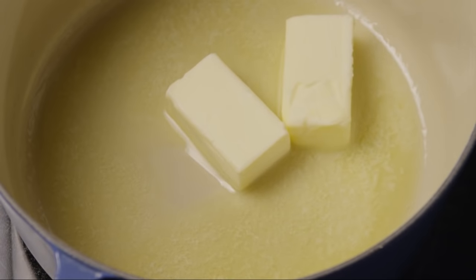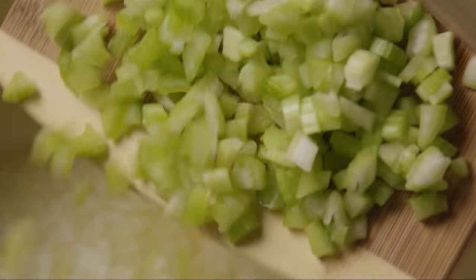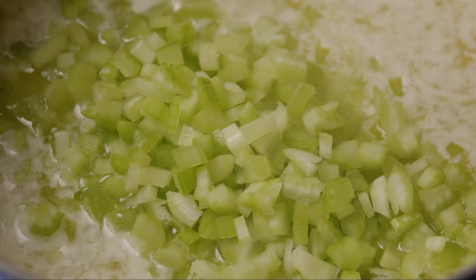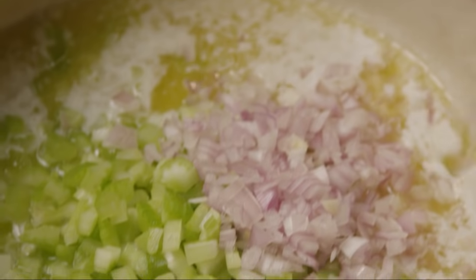Melt half a cup of butter in a medium pot over medium heat. Add in the celery and the shallots, and cook the vegetables until they are tender, about five minutes.